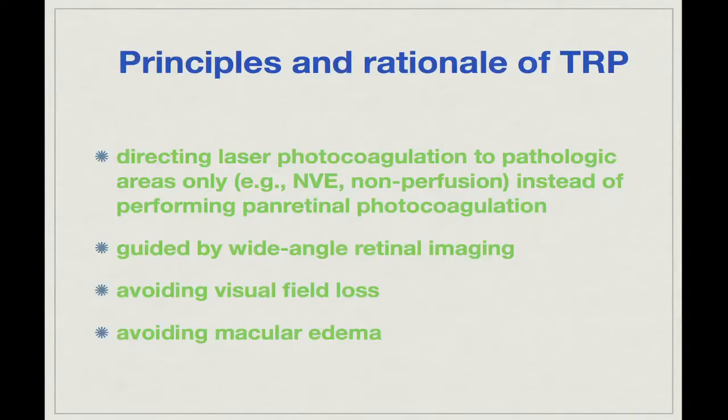What are the principles and rationale for TRP? We are talking about TRP, not PRP. We are using selective treatment, targeting the ischemic retinas or areas of pathology. This was catapulted by the advent of wide-angle fluorescein angiography, which allowed us to see areas of peripheral non-perfusion. By this targeted approach, we avoid shortcomings of classical PRP, such as visual field loss and macular edema.